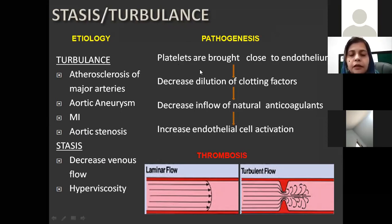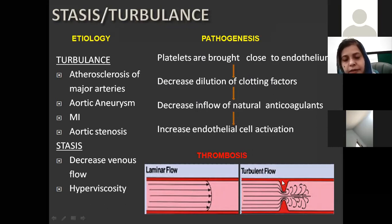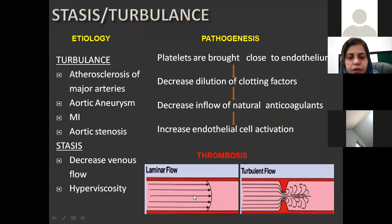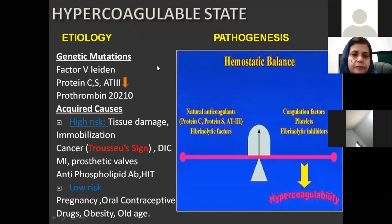What is the mechanism? This is the normal laminar flow — you can see that the blood keeps the cells within the center and does not allow them to come in contact with the endothelium. Whenever there is disruption of this normal flow, platelets come close to the endothelium. There is decreased dilution of the clotting factors because of stasis, so clotting factors get a better chance to stick to the platelets and form a thrombus. At the same time, there is decreased inflow of natural anticoagulants and increased endothelial cell activation. All these factors contribute to stagnant or disturbed blood flow and thrombus formation.